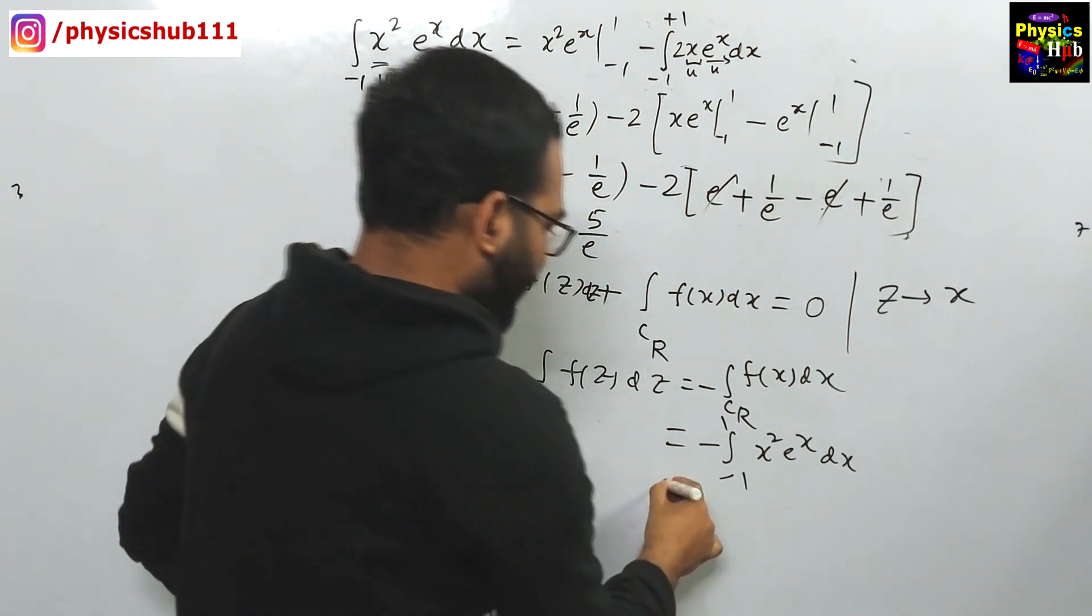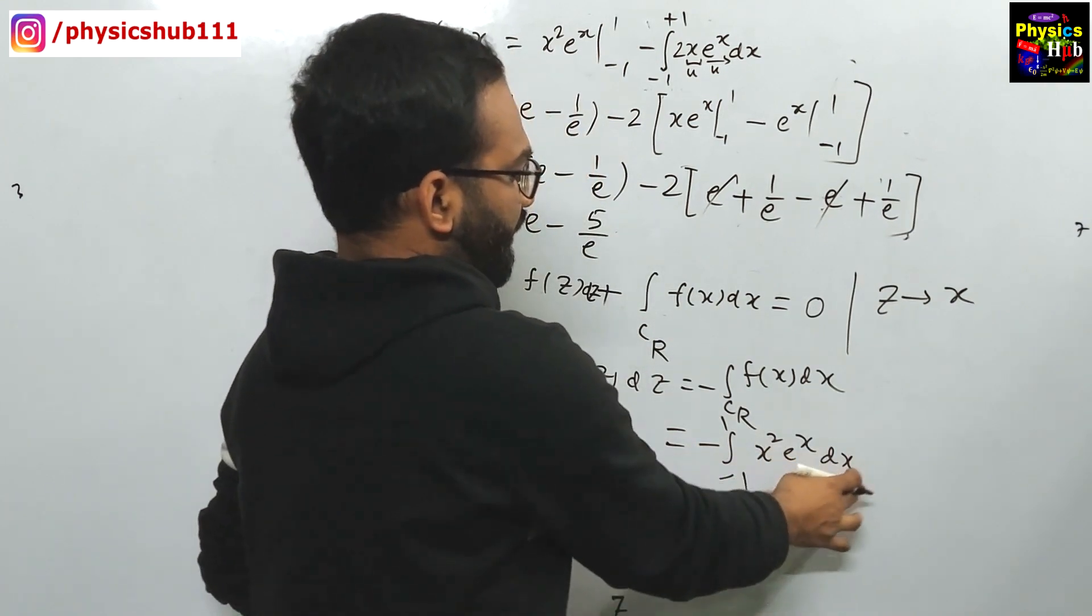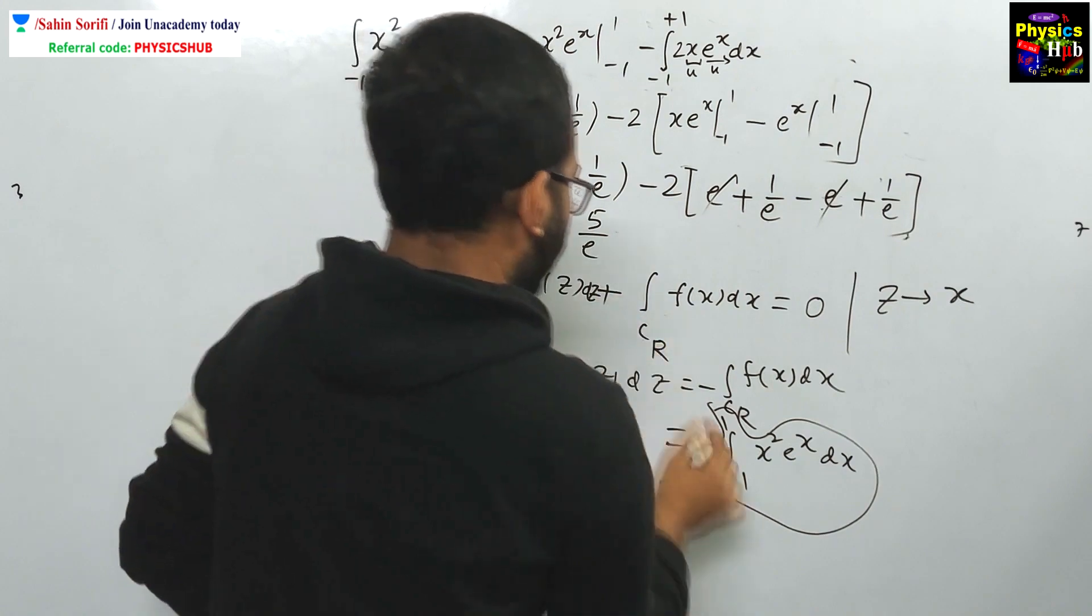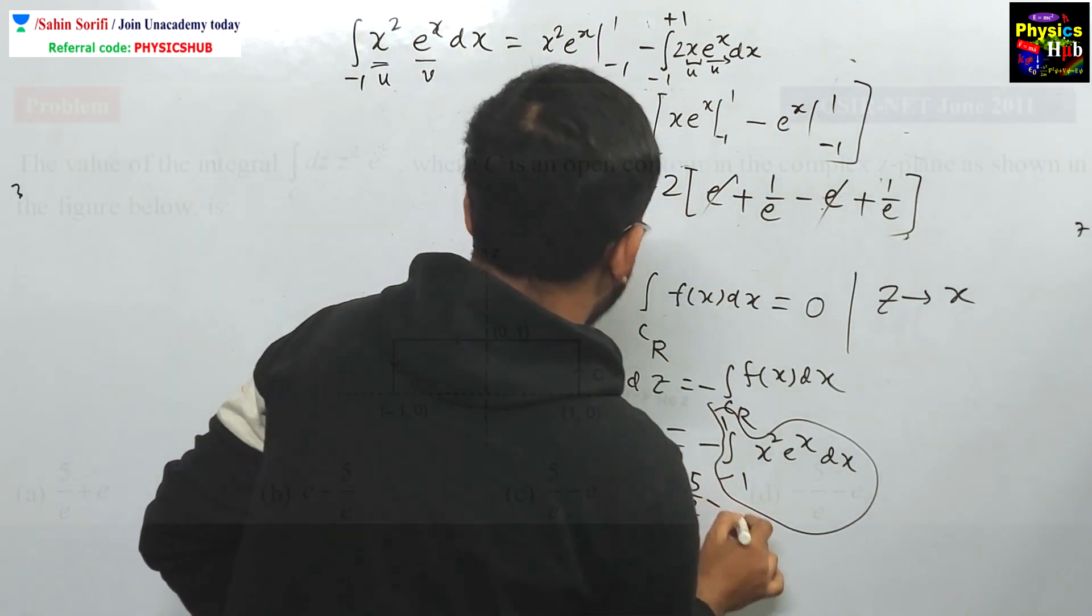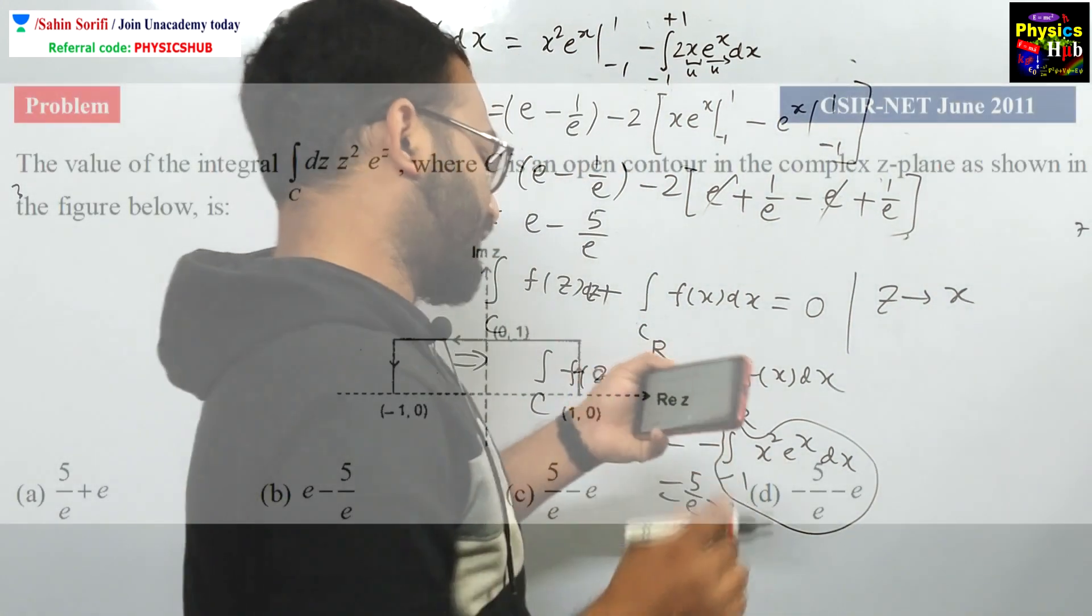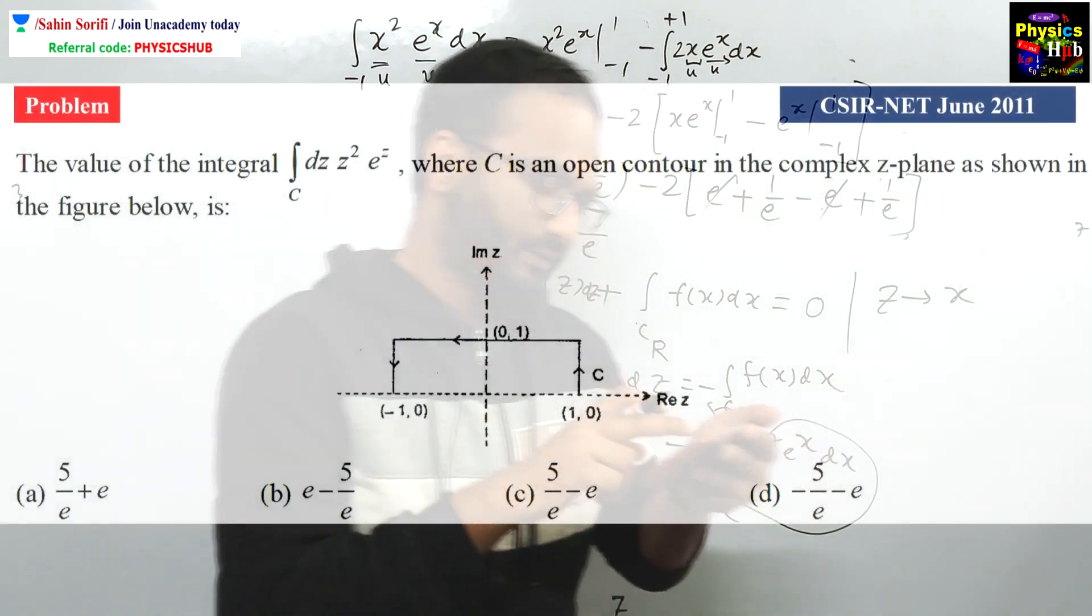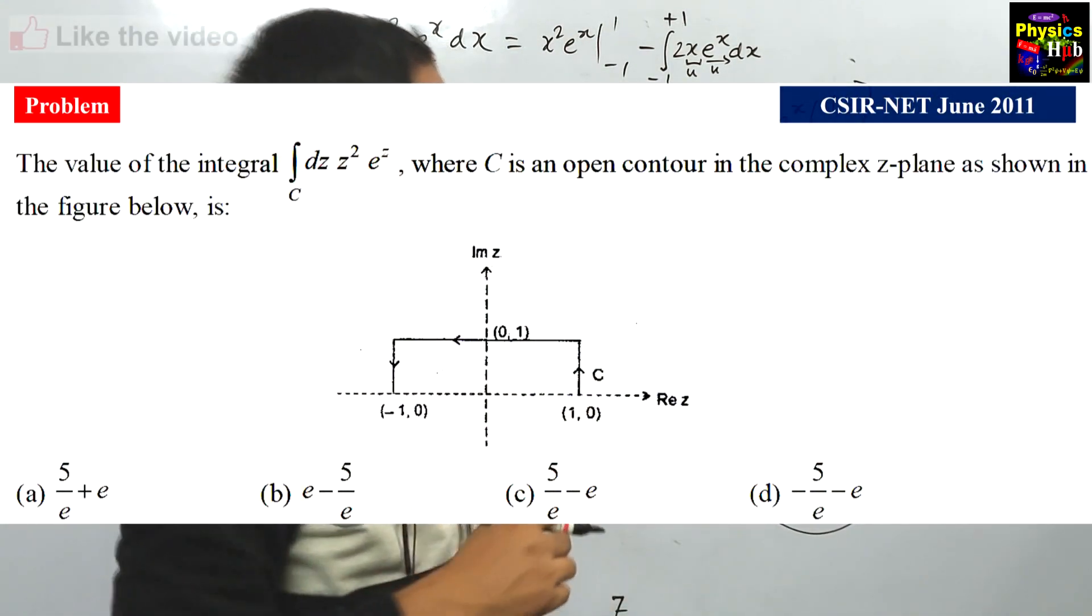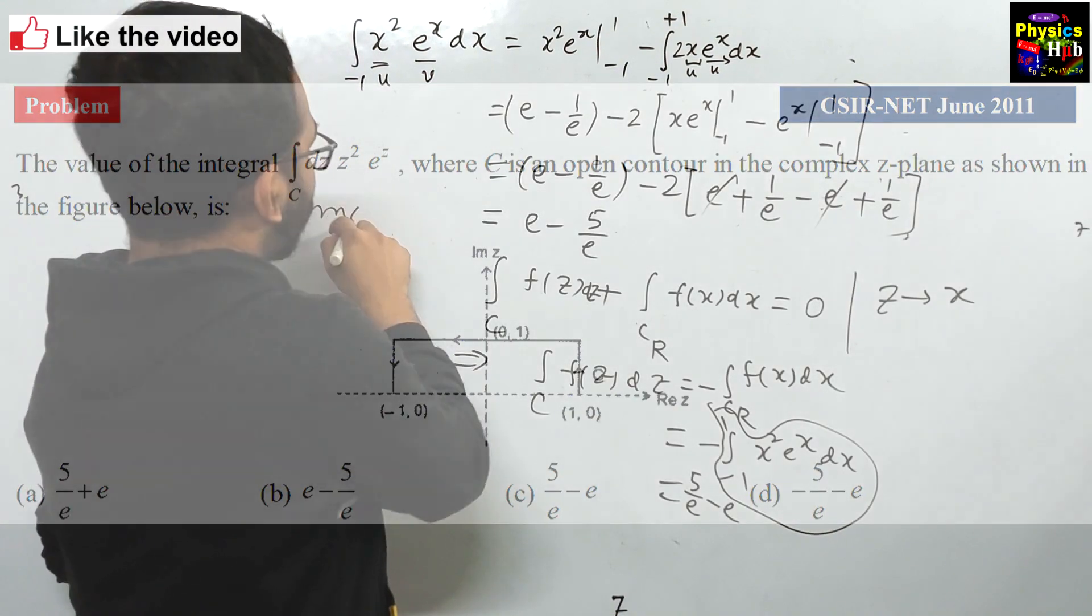Now, in this expression, you can see it is -1 to 1, x² e^x dx. We have calculated this value. Now, with a minus sign, this will be 5 by e minus e, and it is matching with one of the options. Which option it is? It is C. Option C is the correct option for this question.